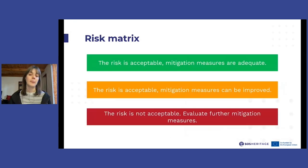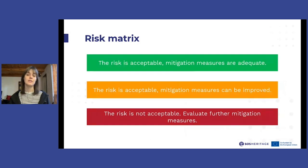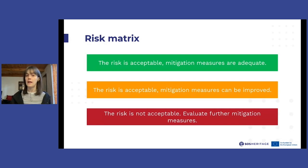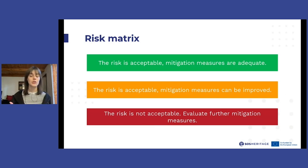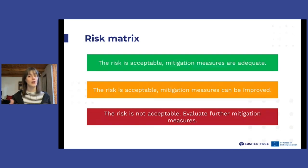As you can see, in the green area we decide the risk is acceptable — mitigation measures already in place are adequate, or no further measures are needed. In the yellow area, the risk is acceptable but mitigation measures should be improved. In the red area, the risk is not acceptable at all, and we should evaluate further mitigation measures to put in place. This is the most urgent risk we should focus on.